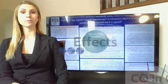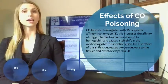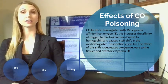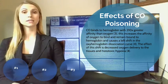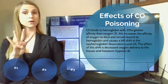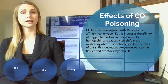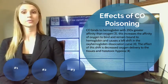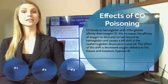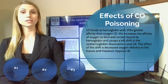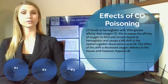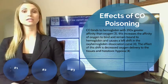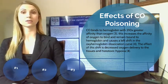Now I'll speak about some of the effects of carbon monoxide. In the bloodstream, carbon monoxide binds to hemoglobin with 210 times greater affinity than oxygen. The binding of carbon monoxide to one of the four tetramer hemoglobin sites increases the affinity of oxygen to bind and remain bound to hemoglobin. This forms carboxyhemoglobin and causes a left shift in the oxyhemoglobin dissociation curve, resulting in decreased oxygen delivery to the tissues and histotoxic hypoxia.